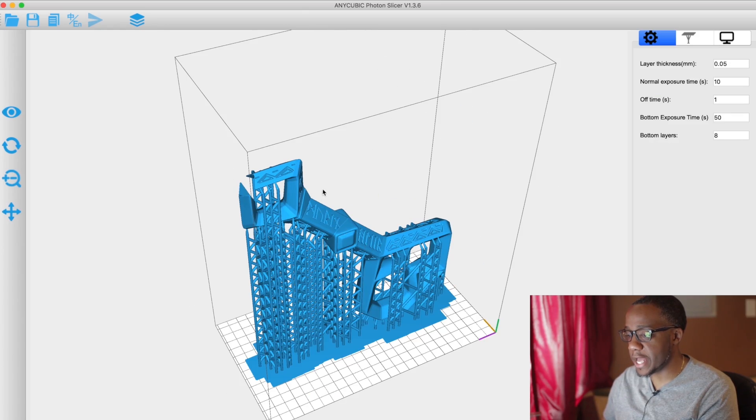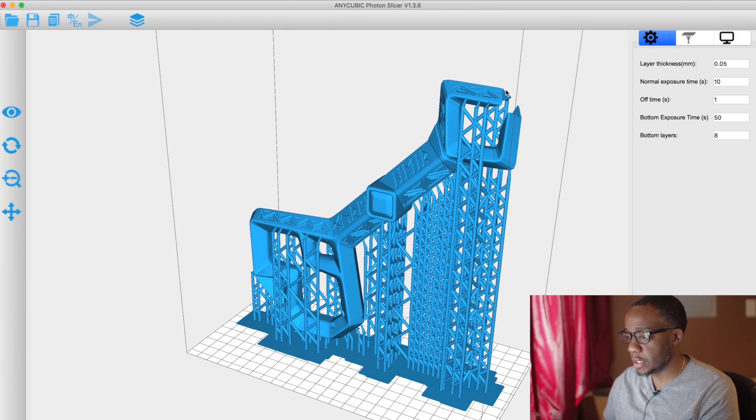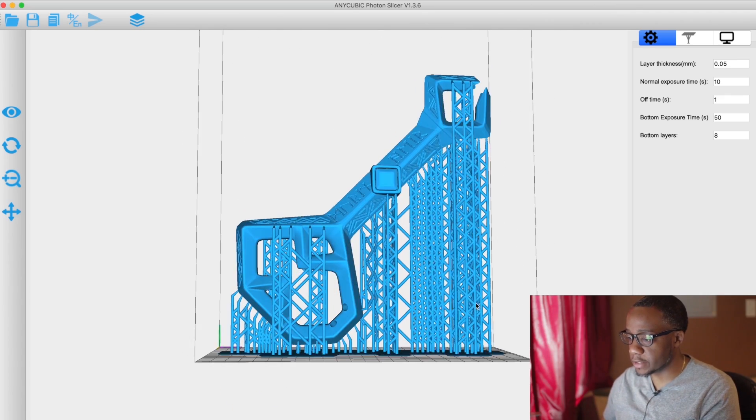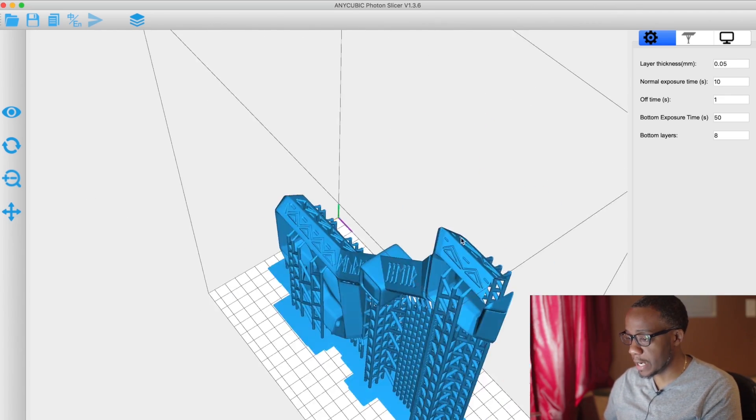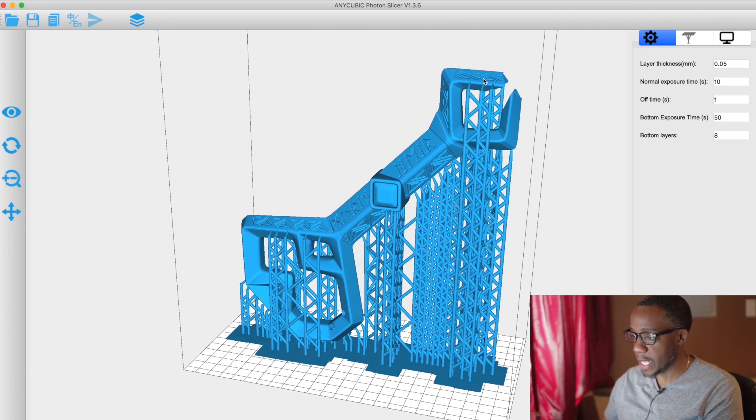All right, so all the supports have been added. I added a few extra supports along this portion of the key and some along the sides. When it was finished, the automatic supports only added it towards the bottom, which is what I wanted, but I wanted to ensure some parts had supports.